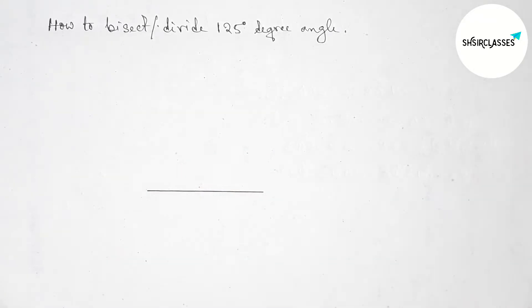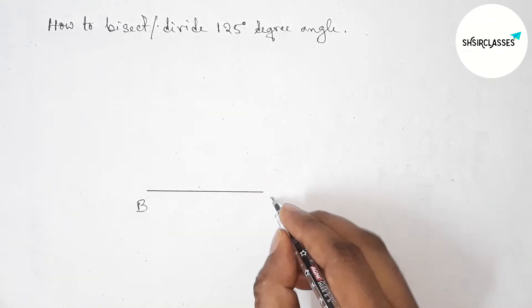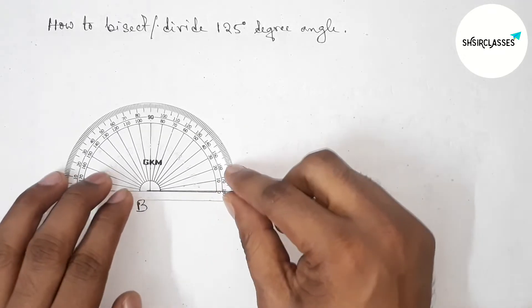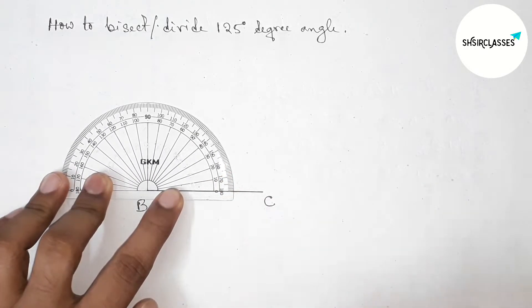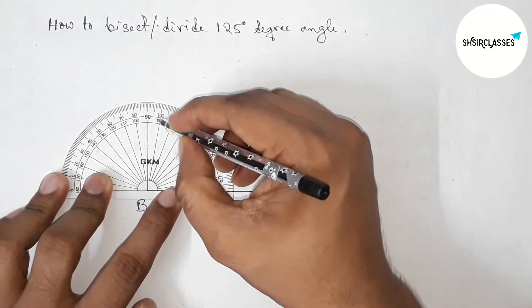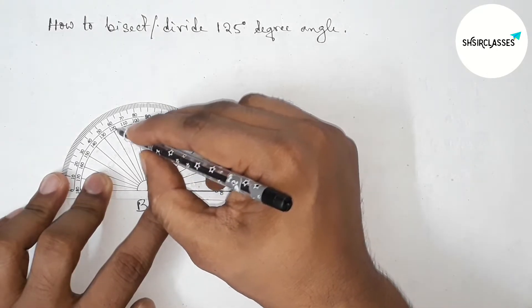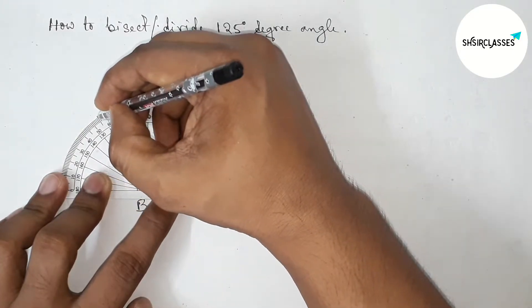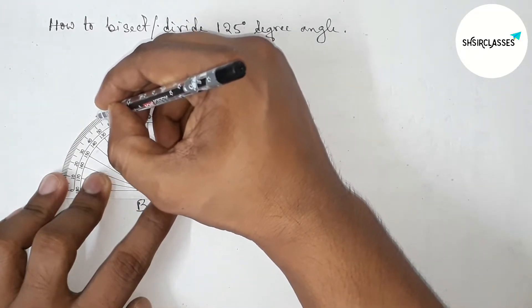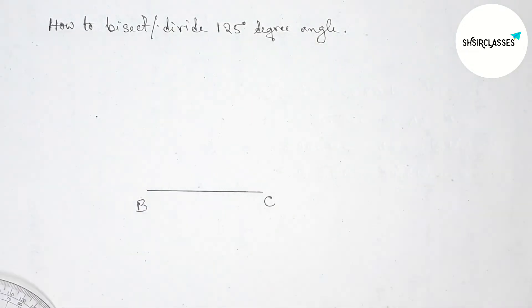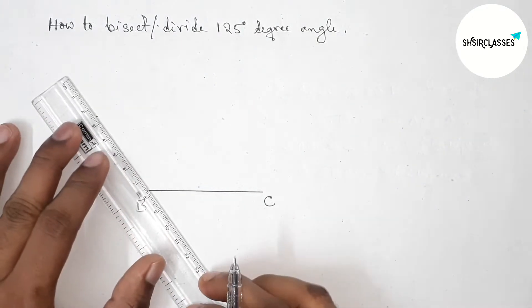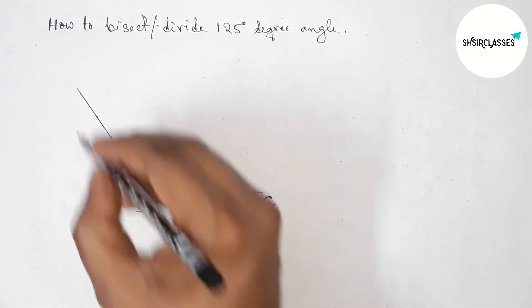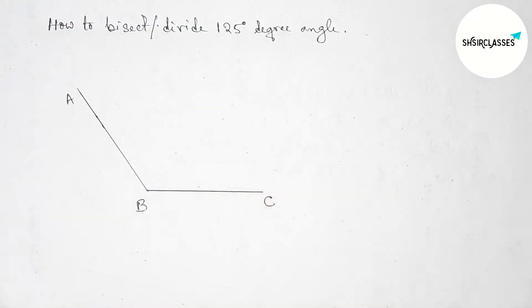draw a line segment, taking point B and here C. Next, drawing 125 degrees with the help of a protractor on point B. So this is 90, 100, 110, 120, and 130. Between 120 and 130 we can get 125. Okay, so now joining this line to get a 125 degree angle and now taking point A.